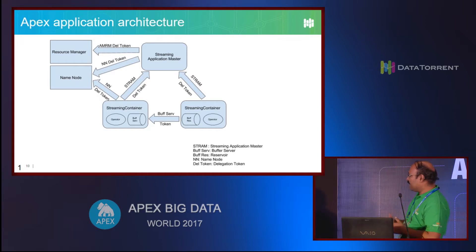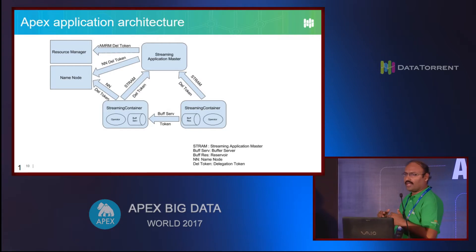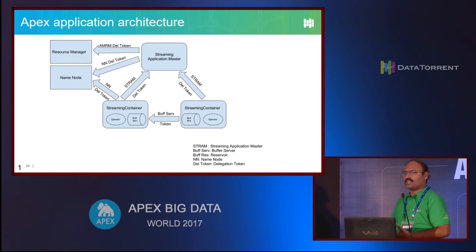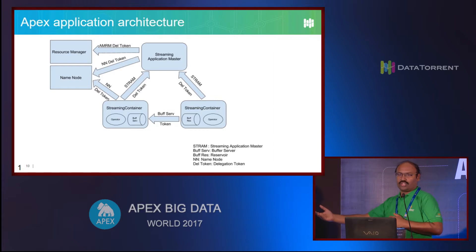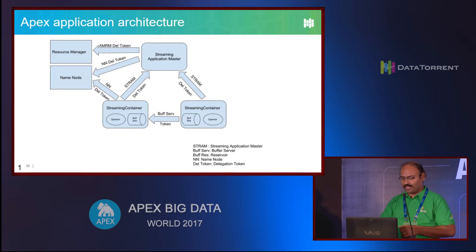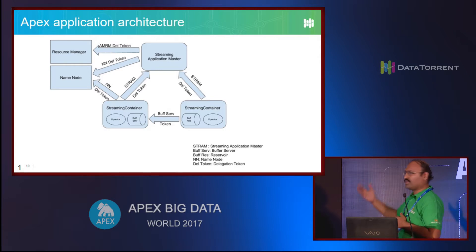In all these cases, the application master and containers are not on fixed nodes, so they don't have Kerberos credentials. So they use delegation tokens to talk to Hadoop. Both the resource manager and the name node have delegation tokens, and the application master uses those delegation tokens to authenticate and request services. How does the application master get those delegation tokens? That happens from the CLI - before launching the application, because the CLI has Kerberos credentials, it connects to resource manager, requests the delegation tokens, and passes them along in the request to launch the application master. So the application master, when it starts, already has those delegation tokens.